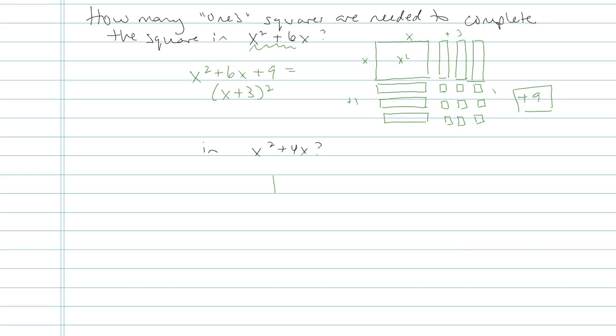If I was given x squared and 4 x bars, here's my x squared bit and then here's my 4 x bars, I'm trying to figure out how many little units would I need to turn this thing into a perfect square.